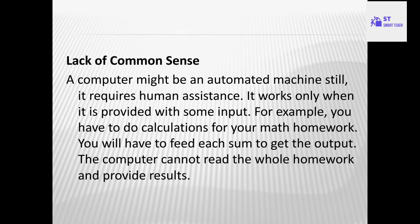The next disadvantage is lack of common sense. A computer cannot decide what is right and what is wrong — they don't have common sense. A computer may be an automated machine, but it still requires human assistance. It works only when it is provided with some input. For example, if you want to do calculations for your math homework, you have to feed each sum to get the output. If you want to add 10 numbers, you need to give those 10 numbers as input, then only you can get the output.